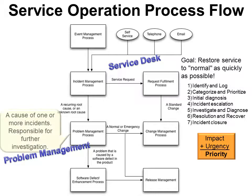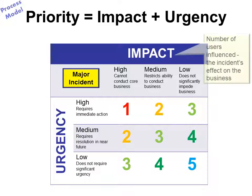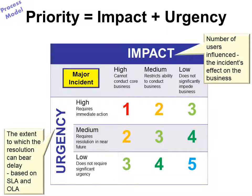Outside the service desk there's problem management. This is the cause of one or more incidents and is responsible for further investigation. The goal here is to find and fix the problem, and that may take some time. The priority matrix measures impact and urgency. The impact is the number of users influenced and the incident's effect on the business, whereas the urgency is the extent to which the resolution can bear delay — it's based on the SLA and the OLA, and those are fixed.